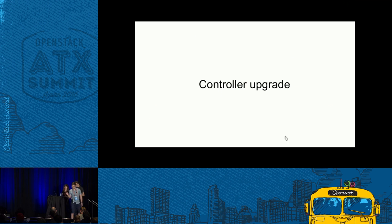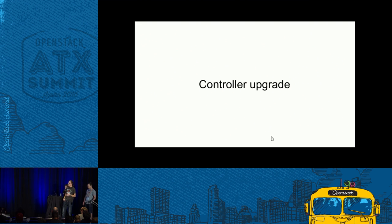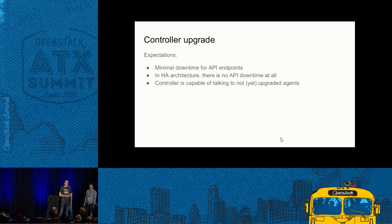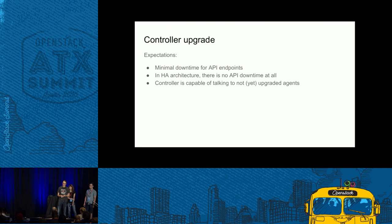Now it's about the controller update. When an operator plans for an upgrade of the controller, the main expectation is that the downtime of the service should be reduced as much as possible, because this service is the front end for the API. As long as the service is shut down, no API requests are handled. If you have a highly available setup for your controller, the expectation is that there may be no downtime at all, because you should be able to upgrade each node of the controller one at a time.